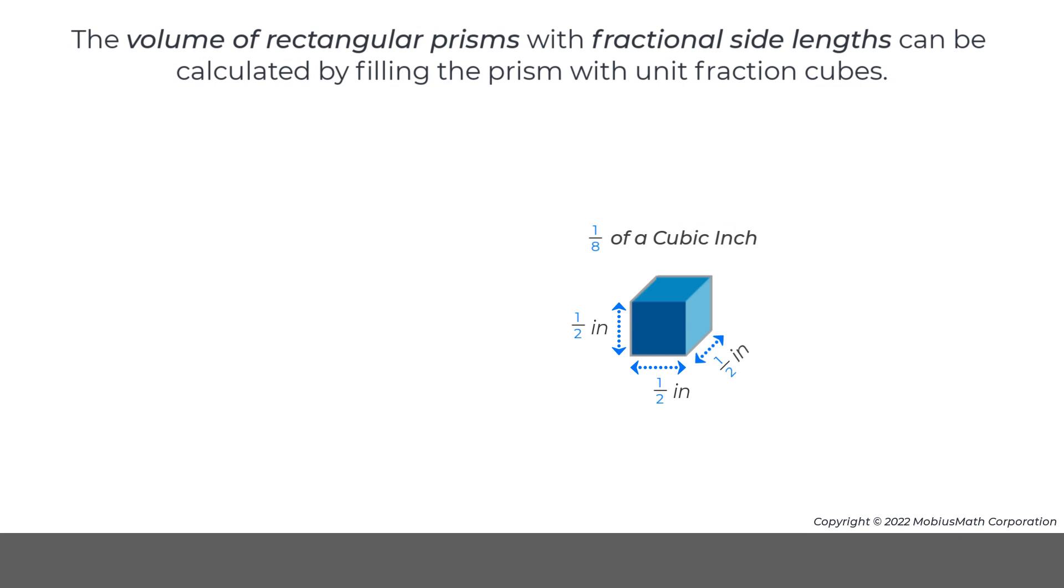The volume of rectangular prisms with fractional side lengths can be calculated by filling the prism with unit fraction cubes. For example, if this gray rectangular prism is filled with unit fraction cubes from the previous example.